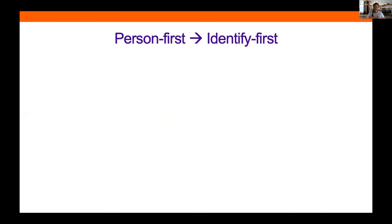Another shift: from person-first to identity-first language. This is a big one, especially for those of us who are sighted practitioners. I think one of the exciting takeaways from the last couple of years is a better awareness of what being an ally means to a population that's been disenfranchised. This idea of how people identify with their disability is a really great example of that.